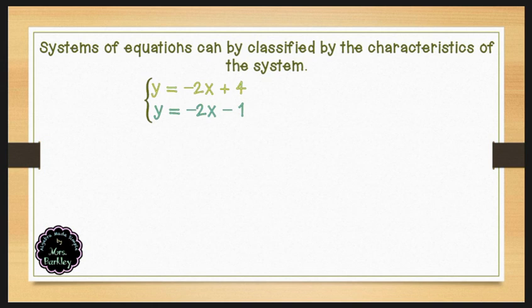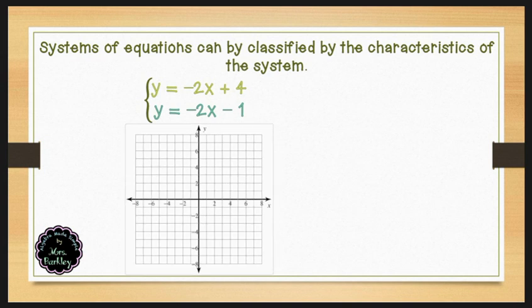In the system y equals negative 2x plus 4 and y equals negative 2x minus 1, we can graph this system of equations and then classify it. We can recognize that both of these equations are in slope-intercept form. Looking at the first equation, y equals negative 2x plus 4, we can see that our slope is negative 2 and our y-intercept is at positive 4.